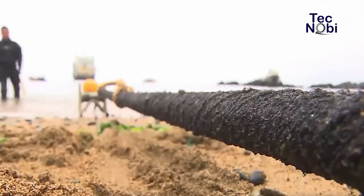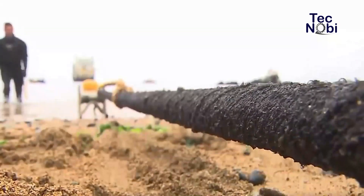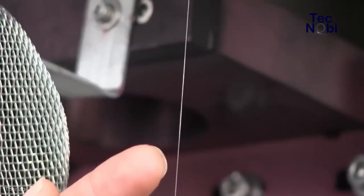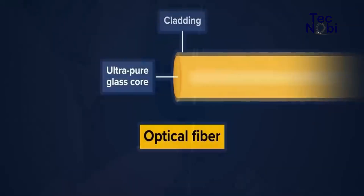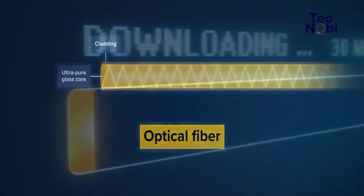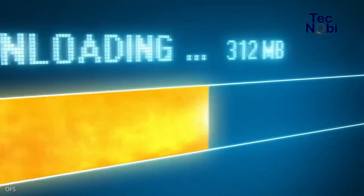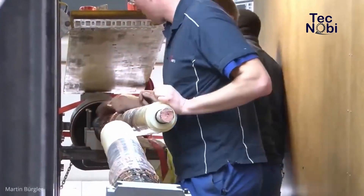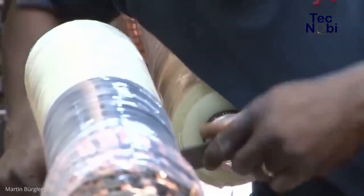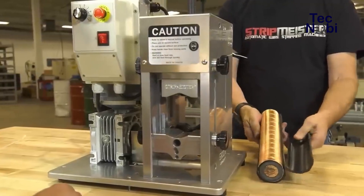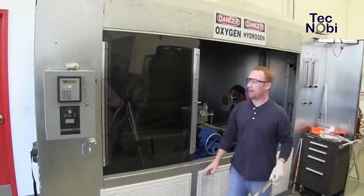Internet cables are now made of optical fiber, a type of cable made of very fine glass. Unlike copper cables, fiber optic cables transmit data in the form of light, whose speed is up to 10 GB per second. Copper cables transmit data in the form of an electrical signal, and copper-based internet connections provide speeds of up to 300 Mbps.